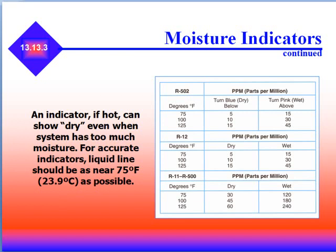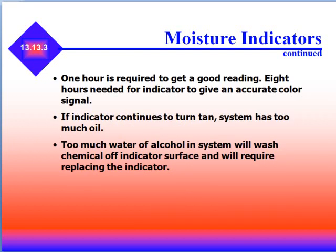An indicator that is hot can show dry even when the system has too much moisture. For accurate readings, liquid lines should be as near 75 degrees as possible. One hour is needed to get a good reading on a moisture indicator, and eight hours is needed for an accurate color signal. If an indicator continues to turn tan, the system has too much oil. Too much water or alcohol in the system will wash the chemical off the indicator and require replacing the indicator.